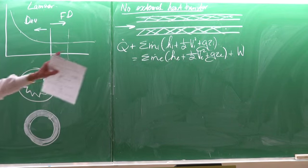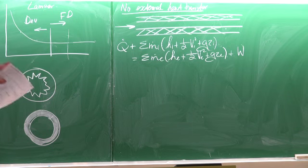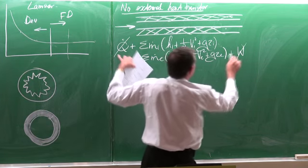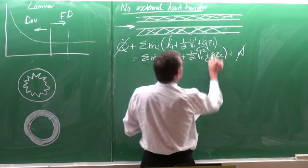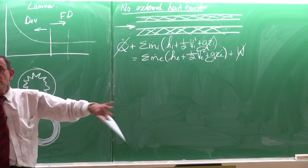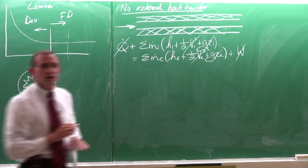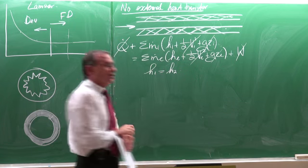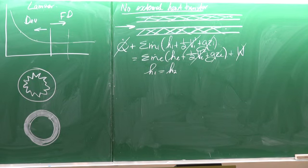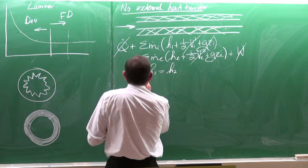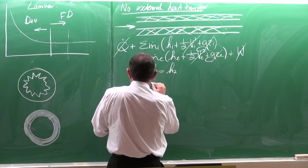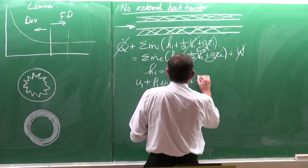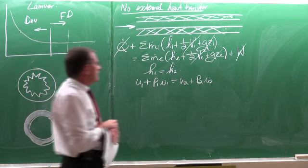Starting from the first law of thermodynamics — heat transfer rate plus the sum of mass flow times enthalpy plus kinetic and potential energy in equals the same terms out plus the work term — with no heat transfer, no work term, no height changes, and equal inlet and outlet velocities, this reduces to inlet enthalpy equals outlet enthalpy.